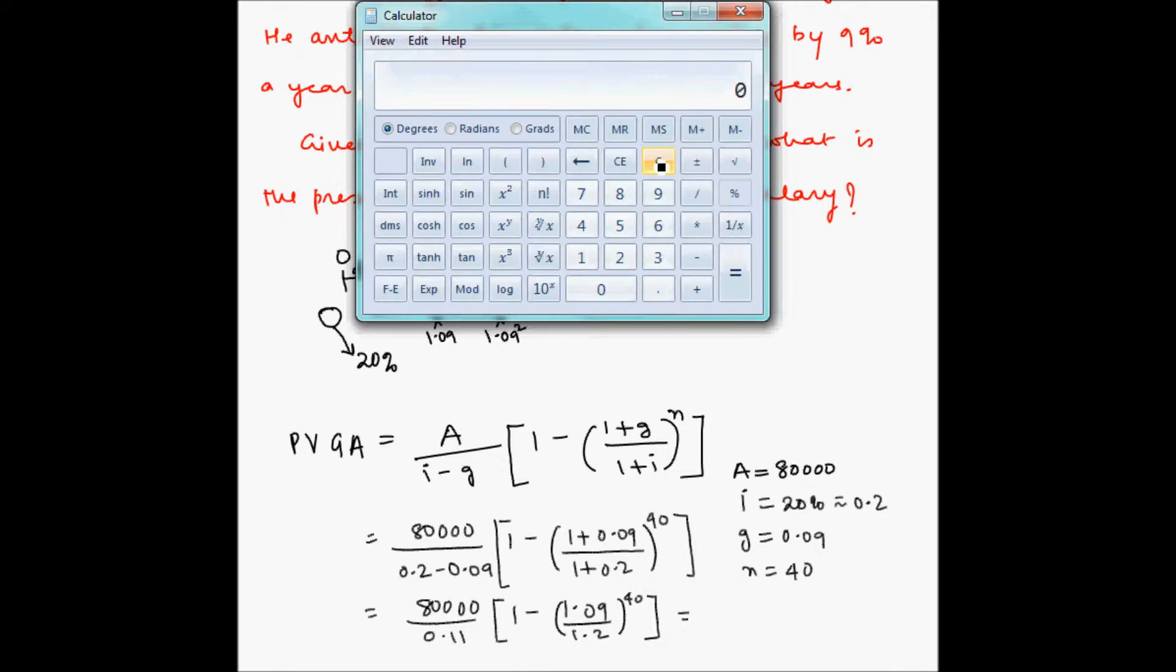So let us calculate this using our calculator. So 1.09 divided by 1.2 to the power 40, this is negative and plus 1, this multiplied by 80,000 divided by 0.11.